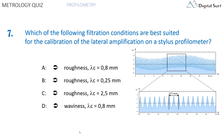Question number seven. Which of the following filtration conditions are best suited for the calibration of the lateral amplification on a stylus profilometer? Answer A: roughness filter, lambda C equals 0.8 millimeters. Answer B: roughness filter, lambda C equals 0.25 millimeters. Answer C: roughness filter, lambda C equals 2.5 millimeters. Answer D: waviness filter, lambda C equals 0.8 millimeters. Multiple answers are allowed.